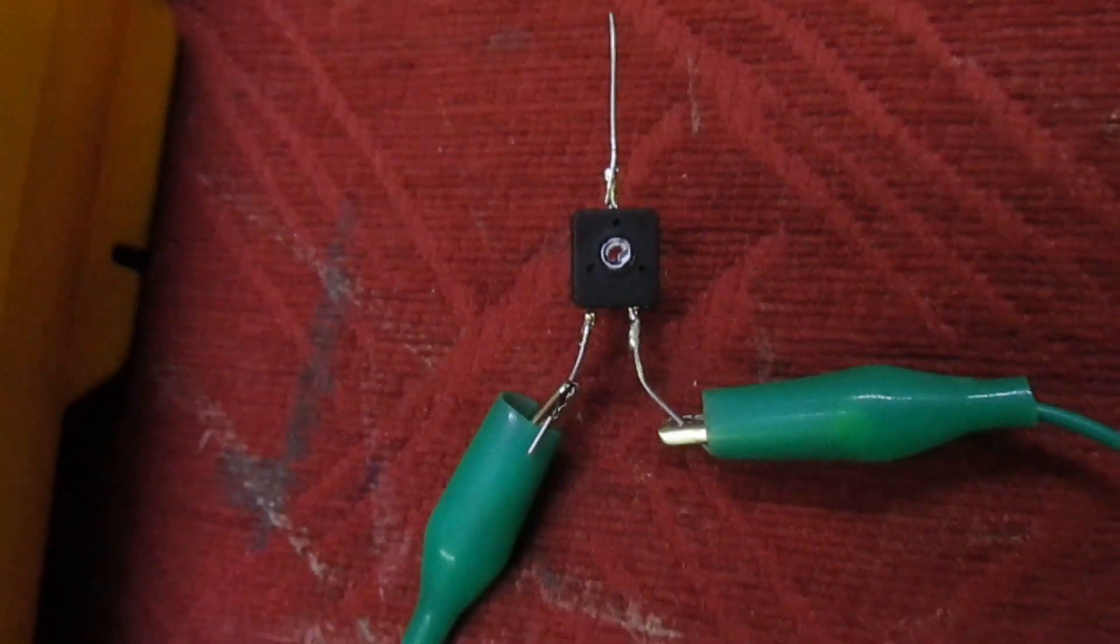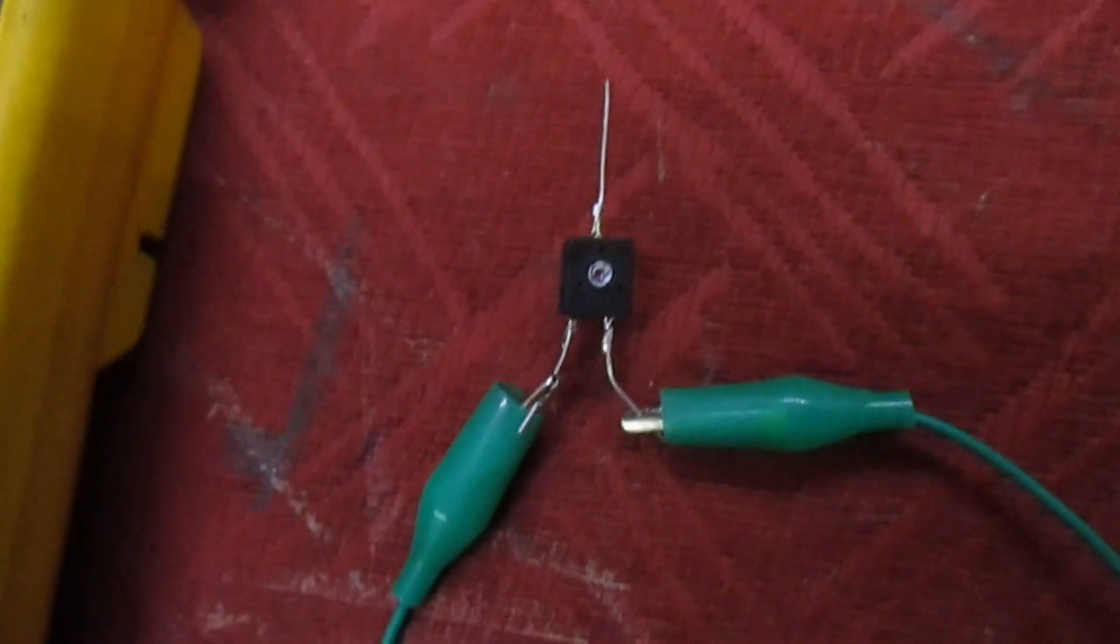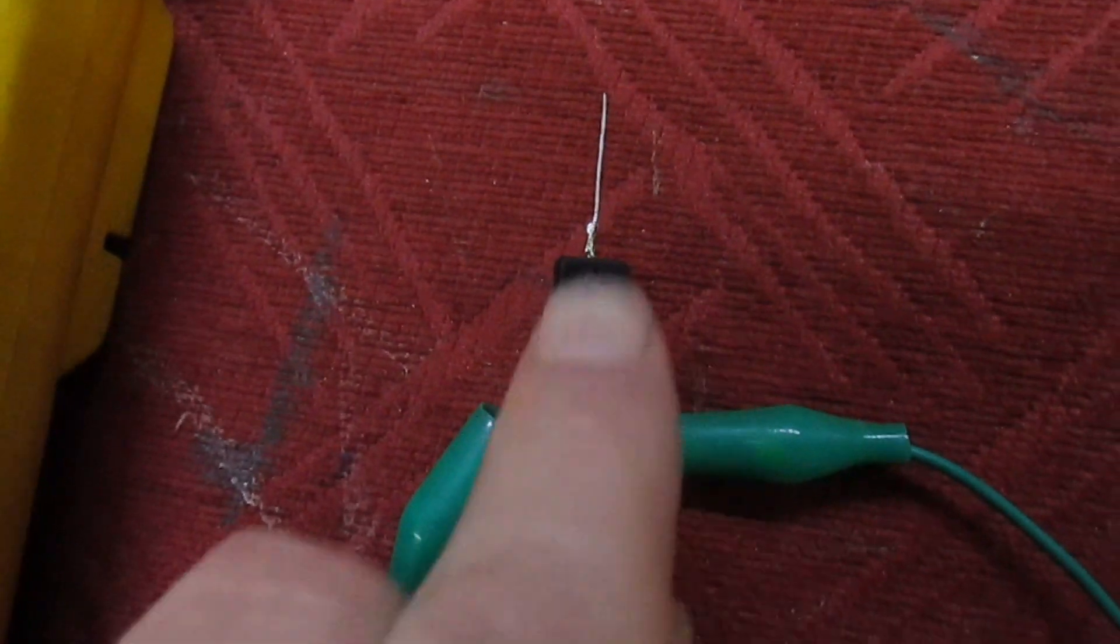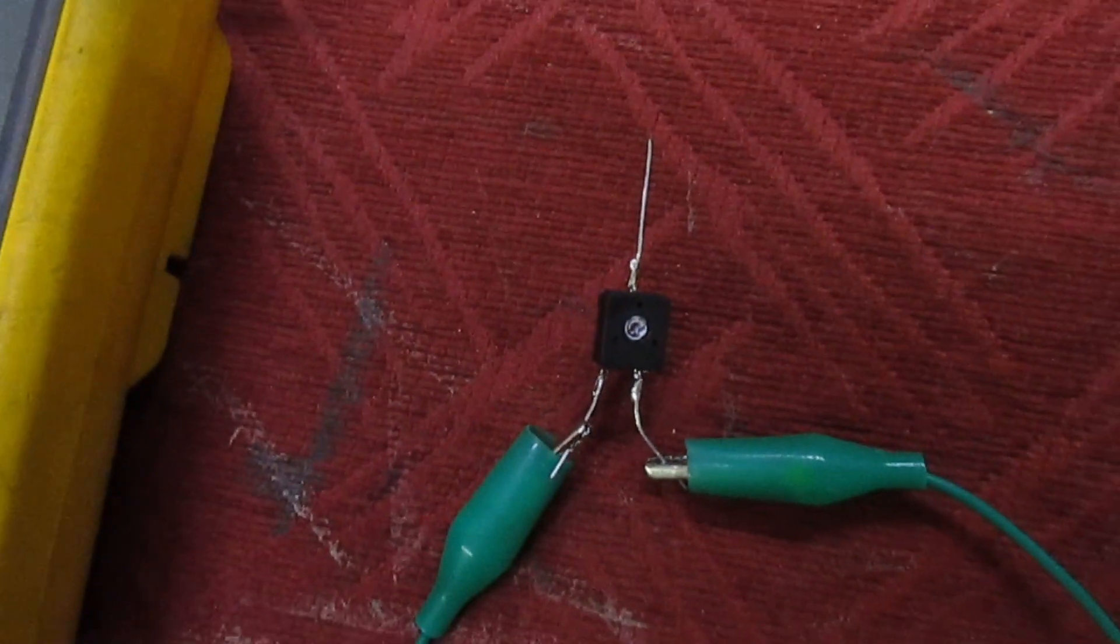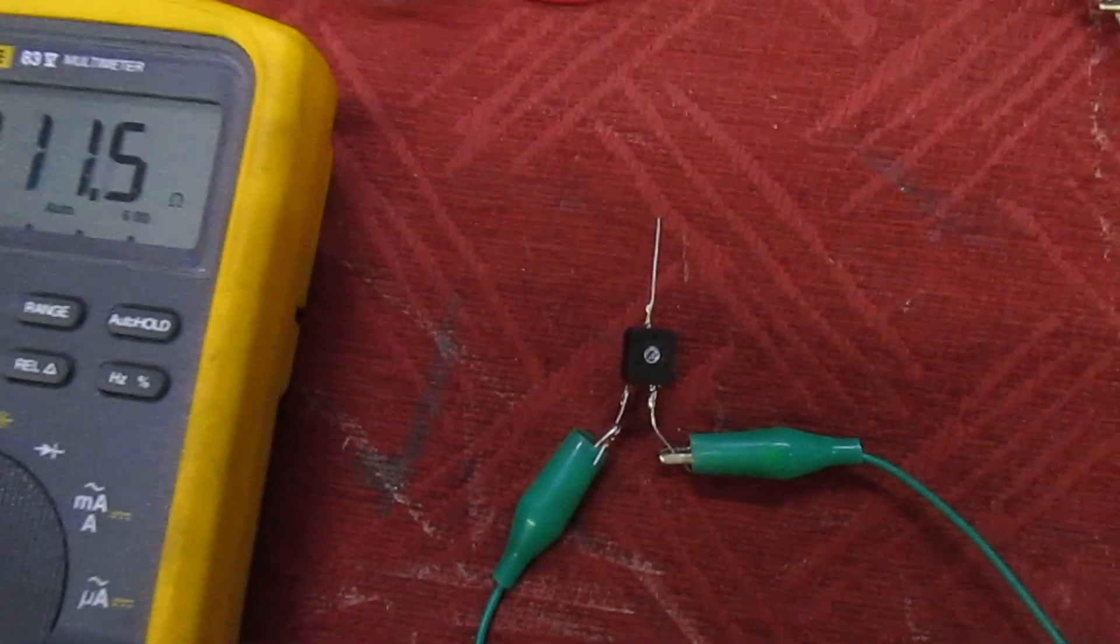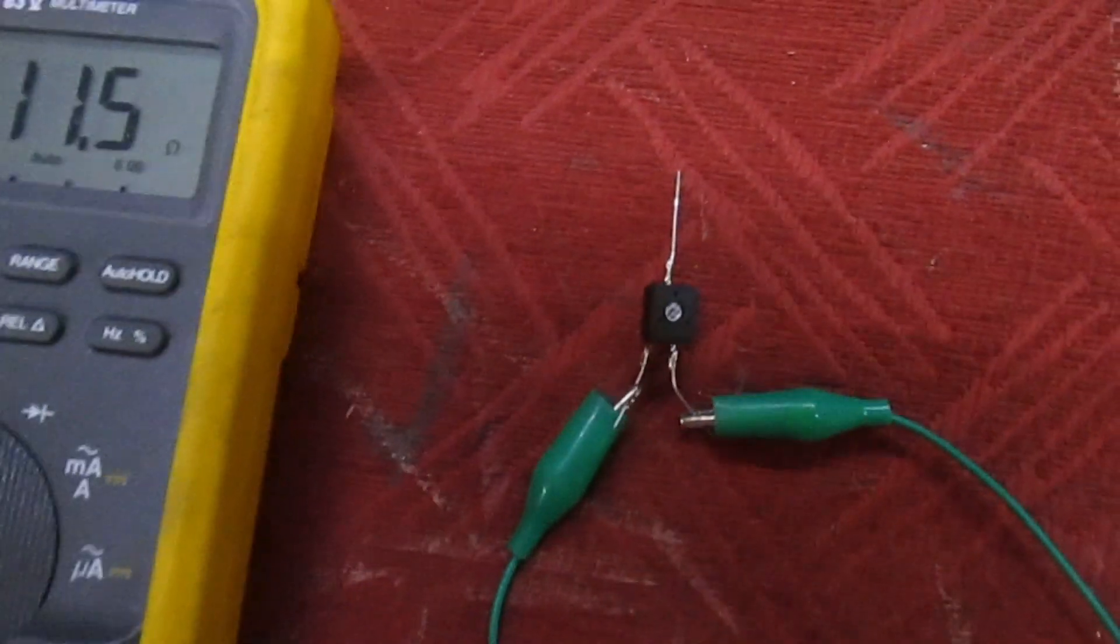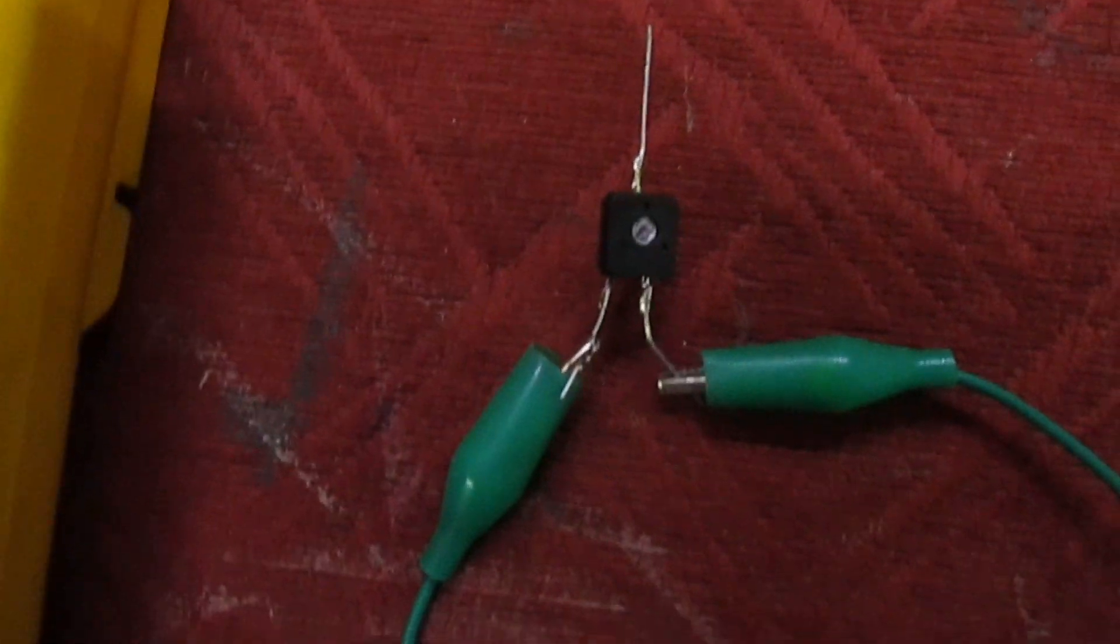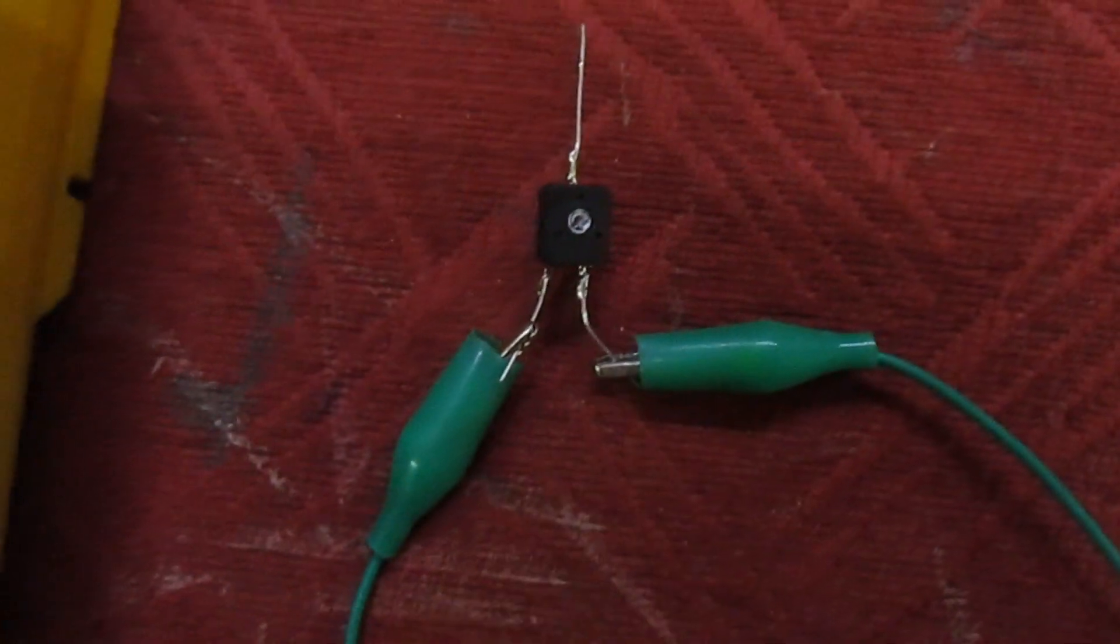I've just soldered three bits of wire on it so we can take some measurements. So you're thinking to yourself, what can go wrong with a pot? Well, this is a 100 ohm preset. So if we measure end to end...